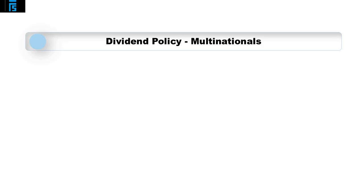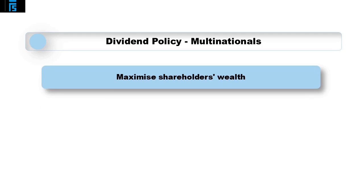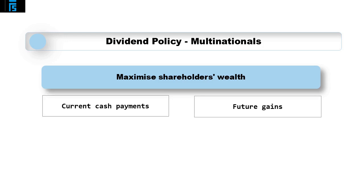In earlier modules of the course we discussed the basics of dividend theory, as well as commonly applied dividend policies. As you may remember, the primary goal of a company's dividend policy is the maximization of shareholder value. Accordingly, the formulated dividend policy should address the preferences of shareholders, who may favor current cash payments to future gains from profits reinvested into projects with positive NPV.